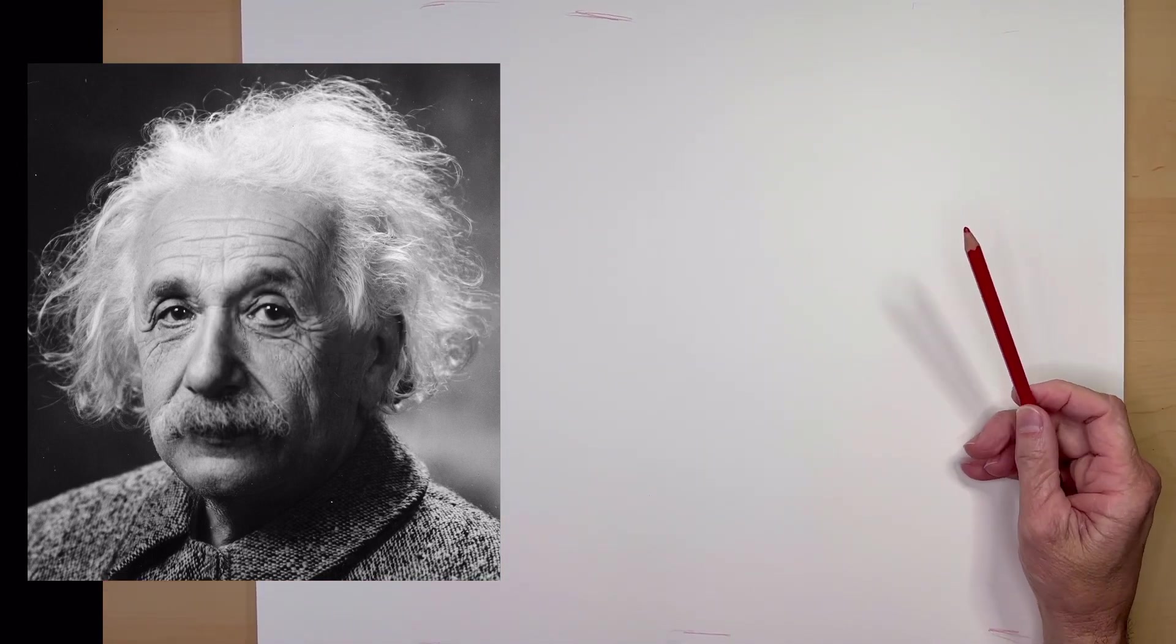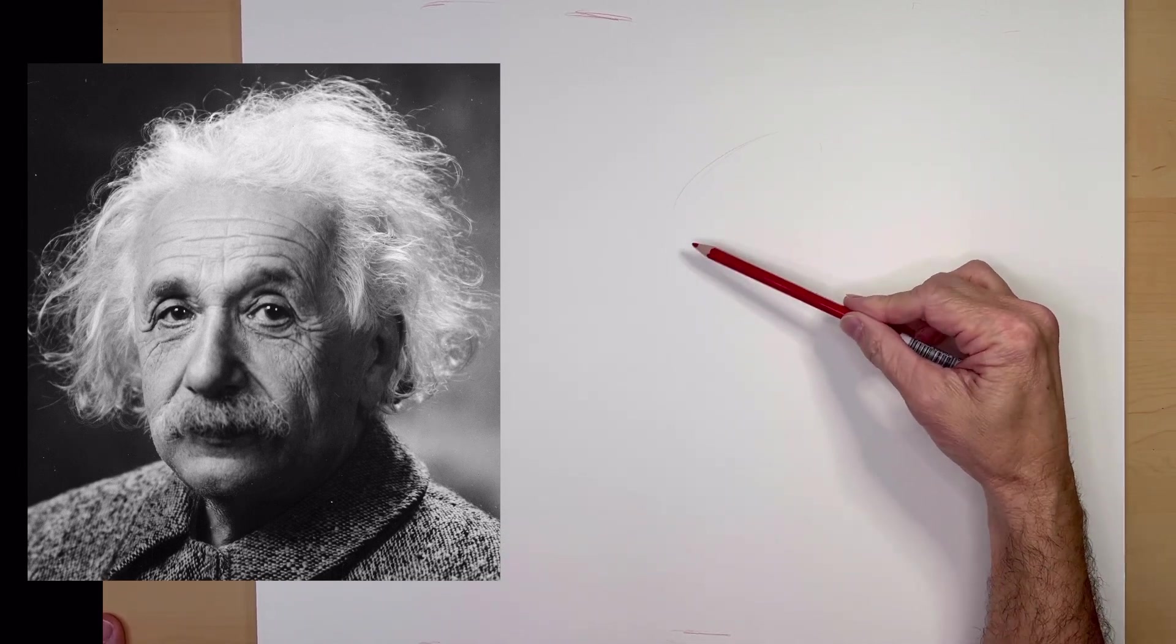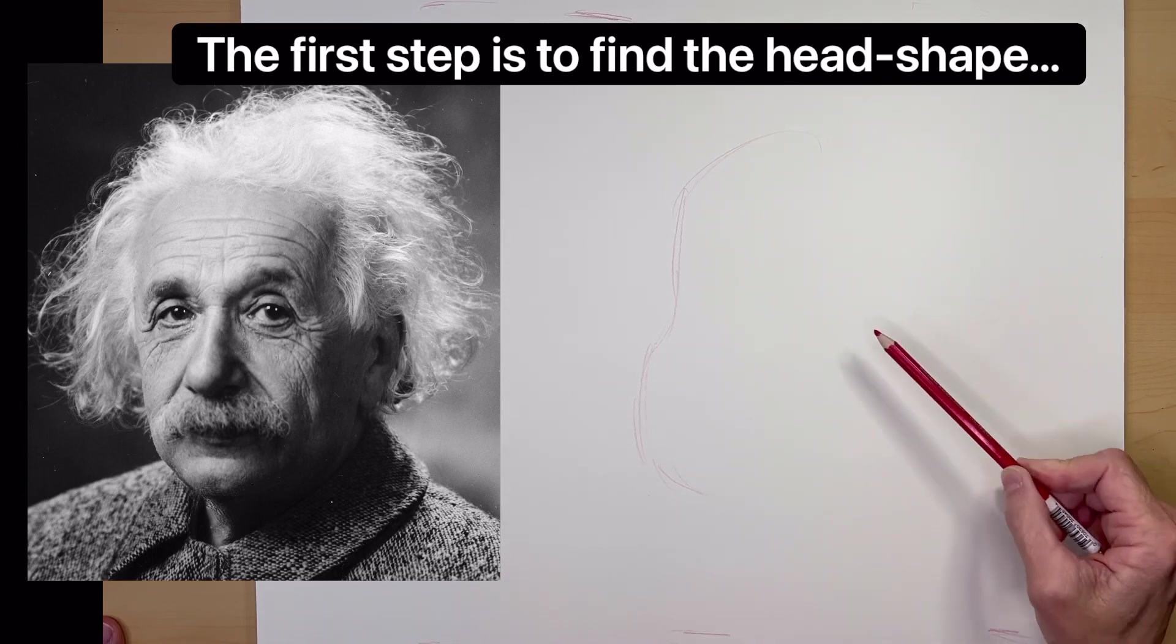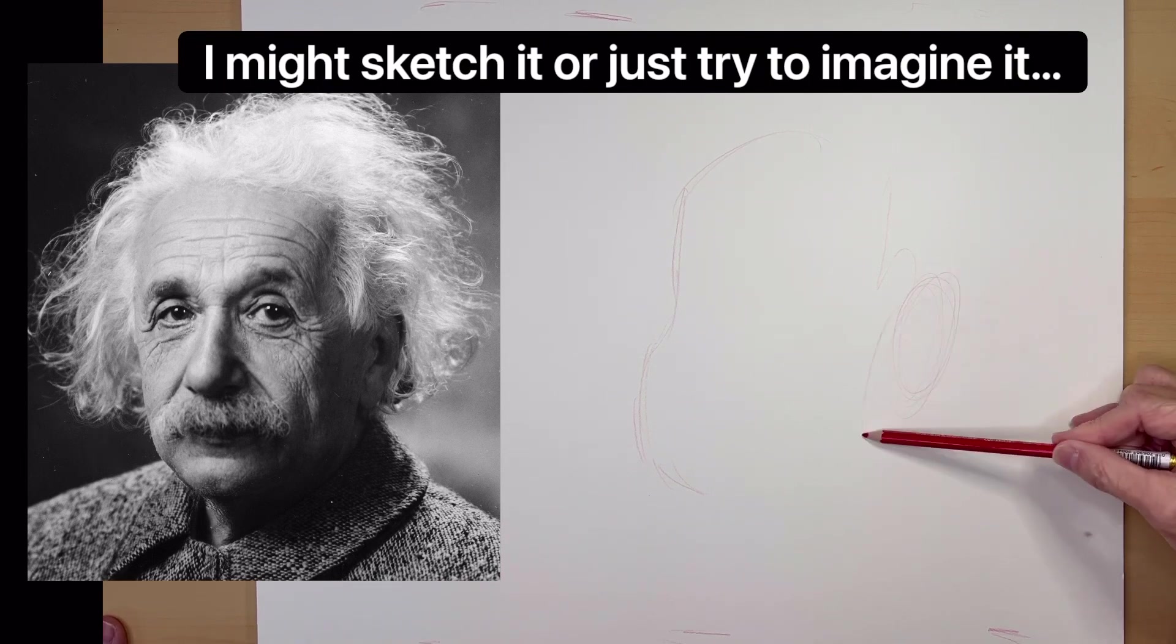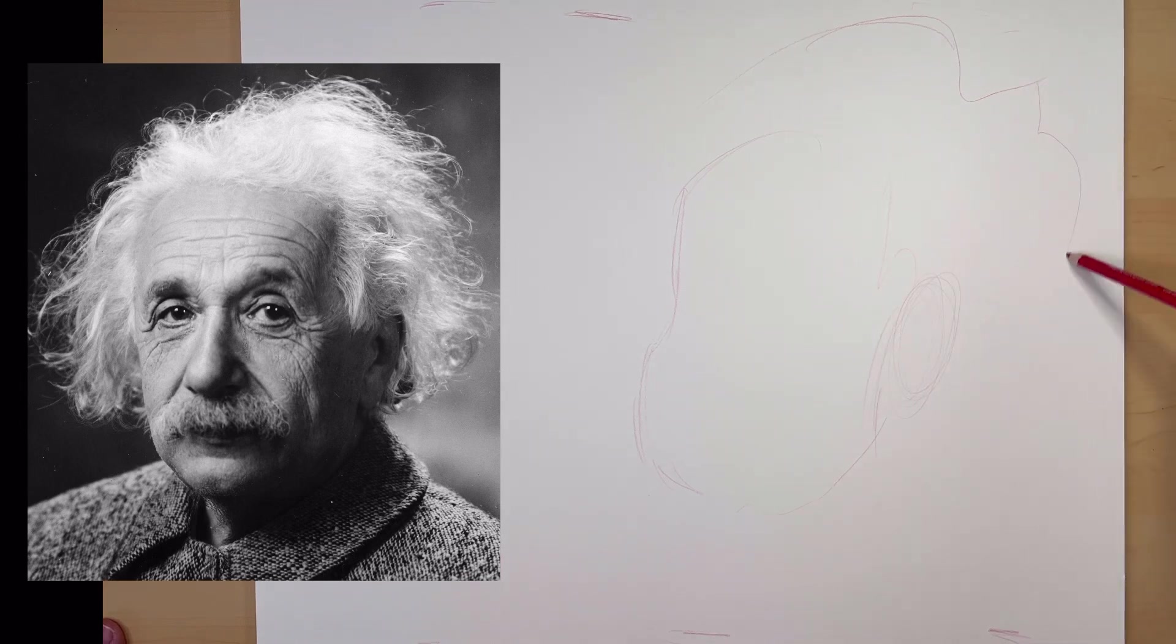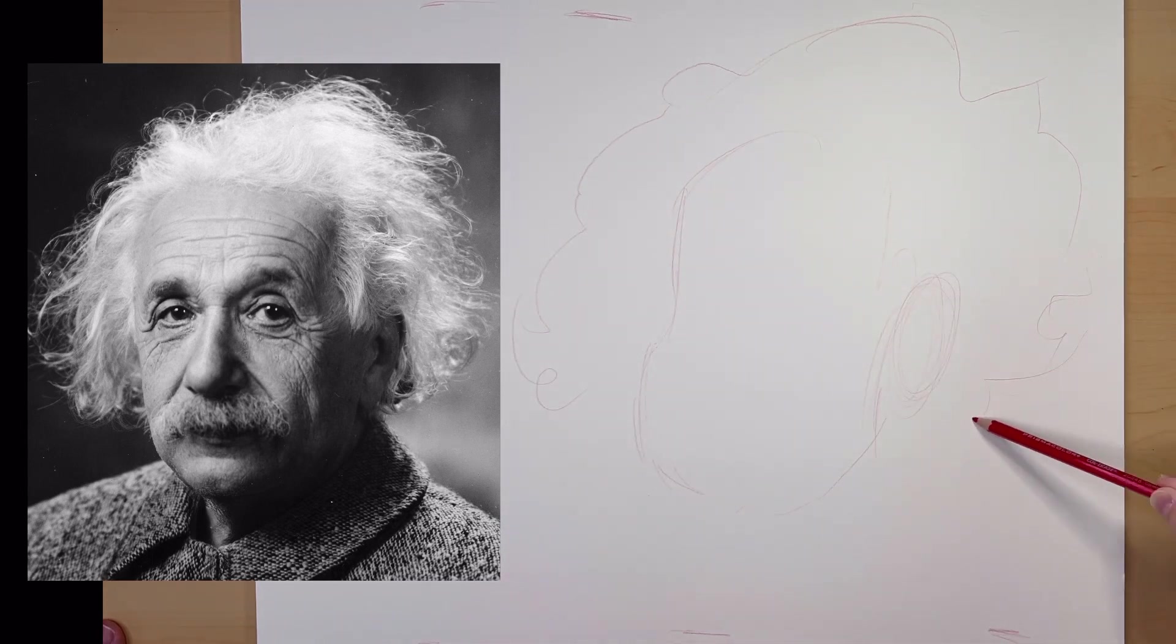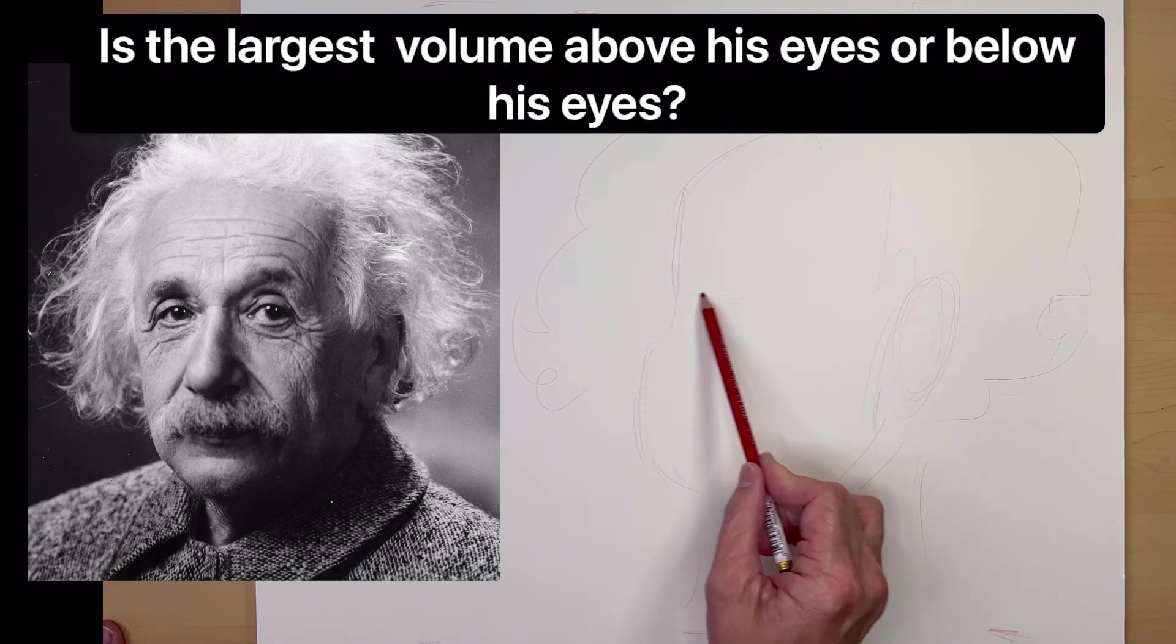On this next one we are going to try and draw Albert Einstein. So the first thing I'm going to do is try to sketch his face. And I'm just trying to look at basic shapes. That's all I'm looking for now is shapes.